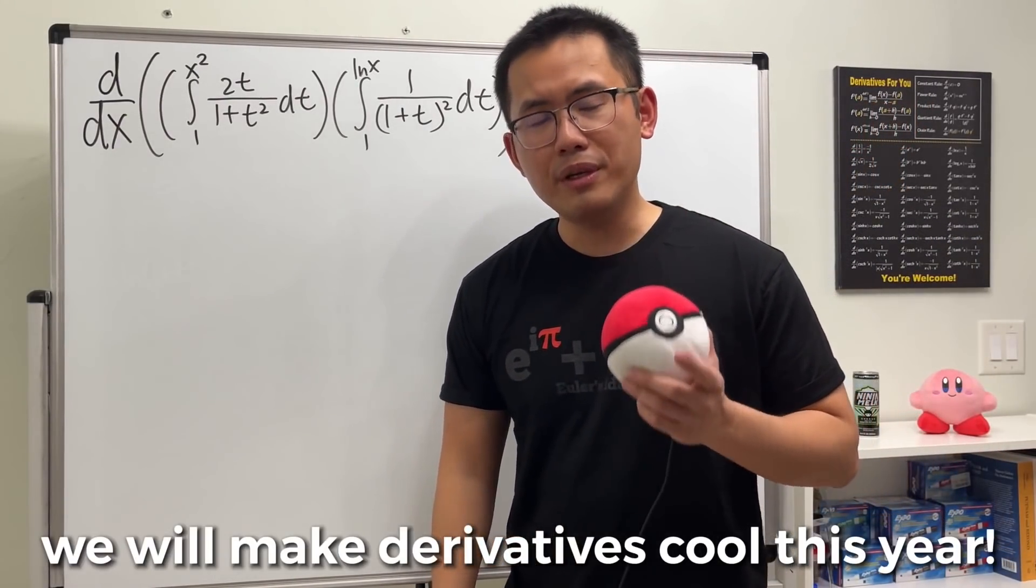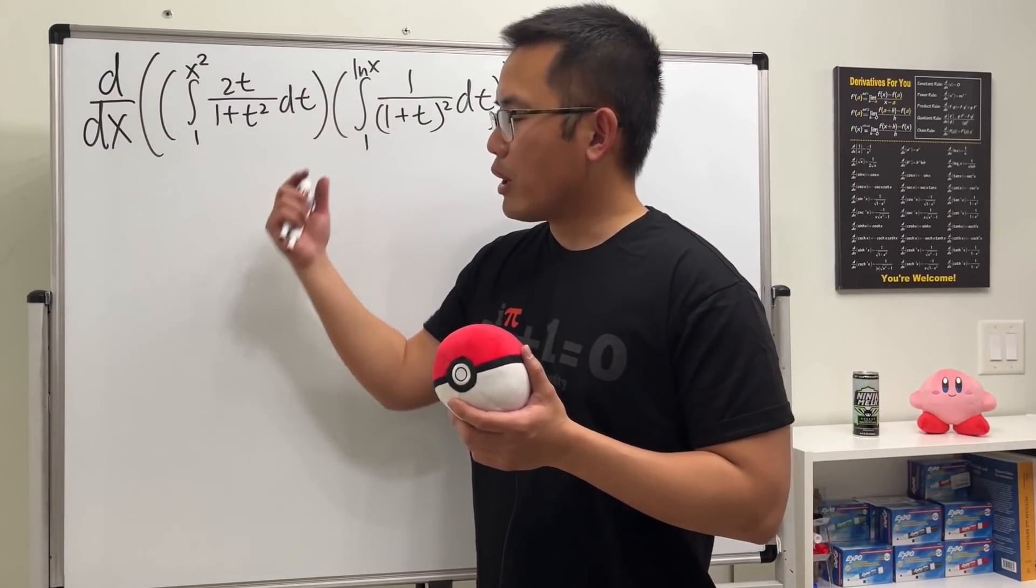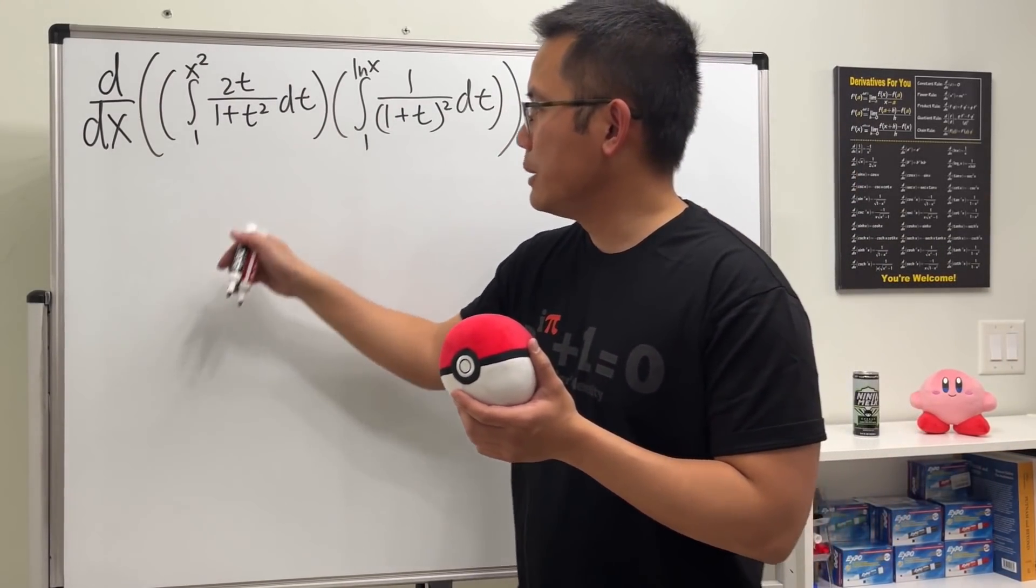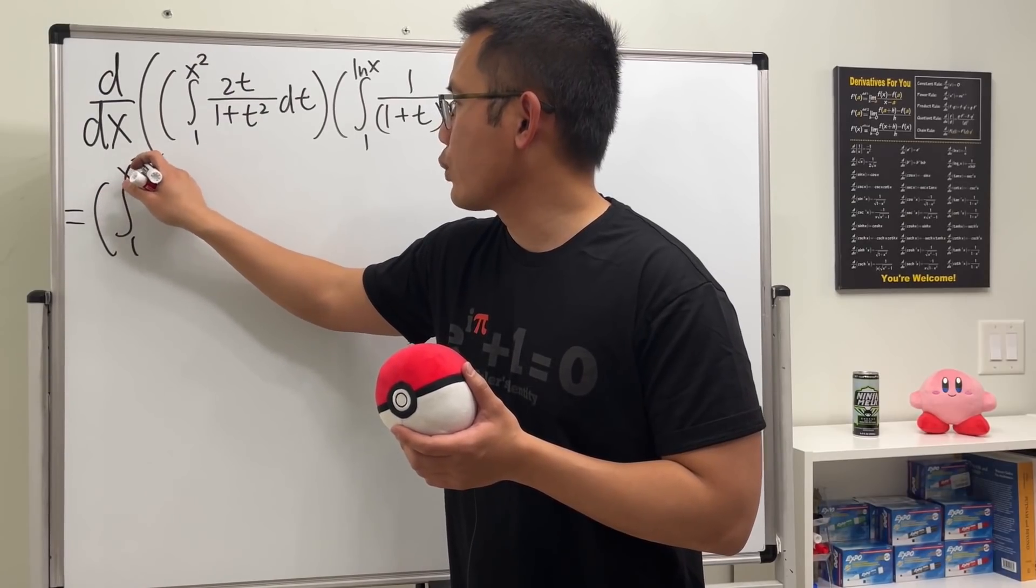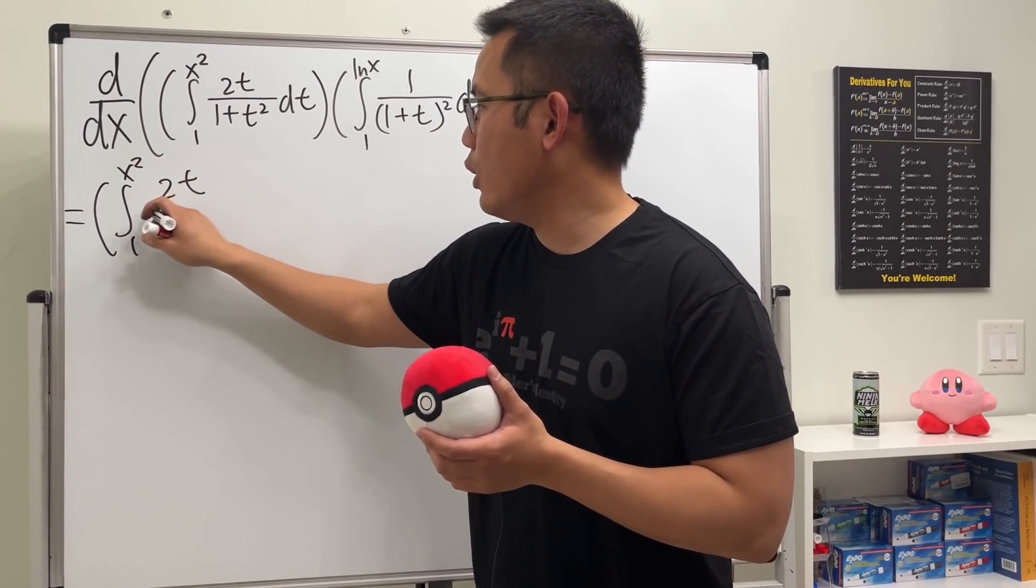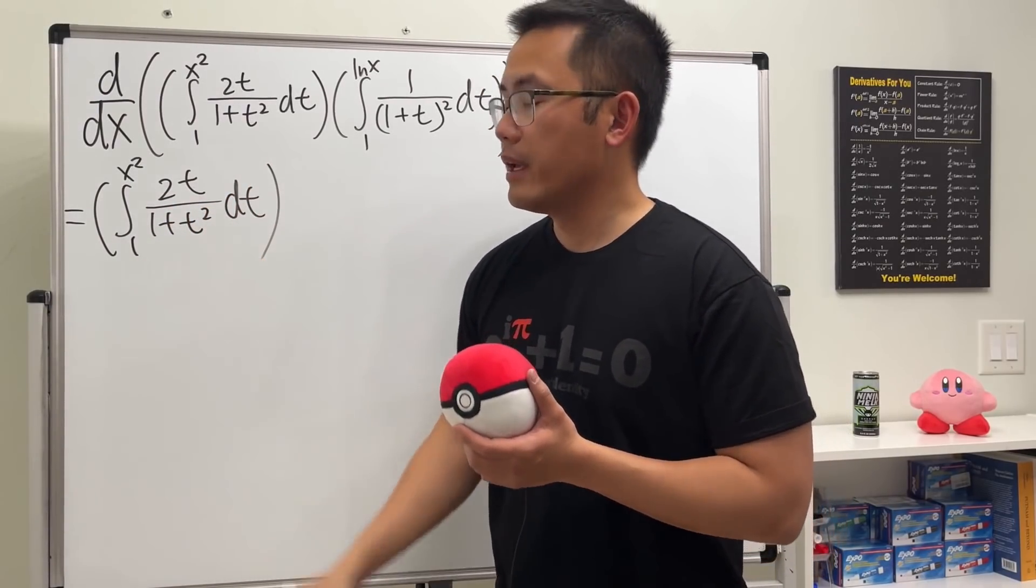As I told you, we will make derivatives cool this year, so here we go. This is the product, so of course use the product rule. I'm going to keep the first function, so we will have the integral going from 1 to x squared, and then we have 2t over 1 plus t squared dt.